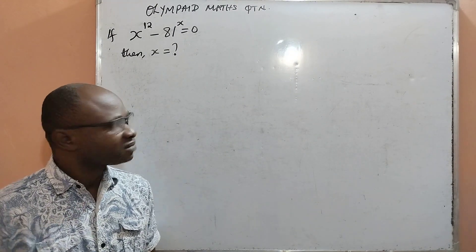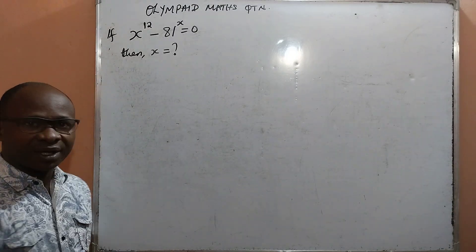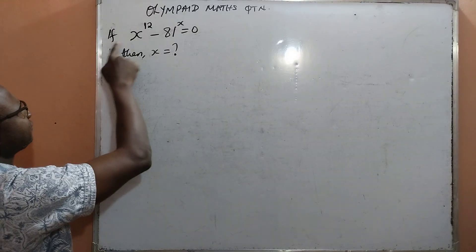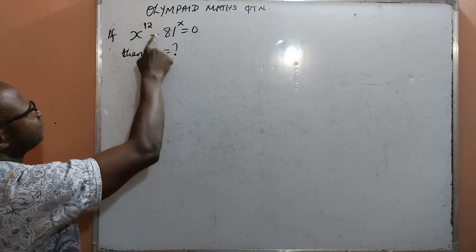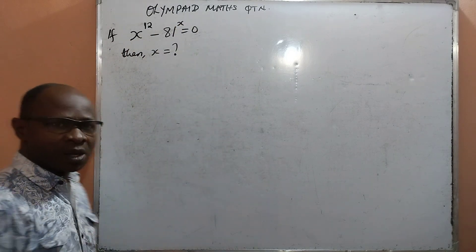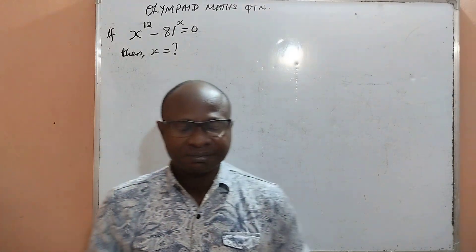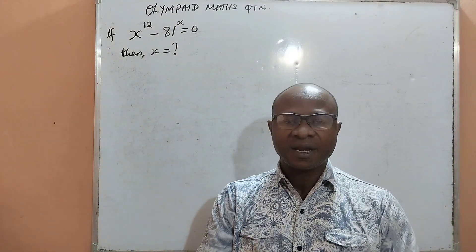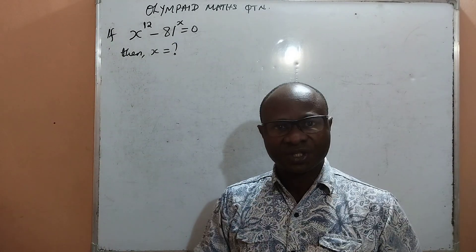Welcome back viewers. Today we have the question: if x raised to the power 12 minus 81 raised to the power x is equal to 0, then what would be the value of x? Kindly watch to the end as we solve.